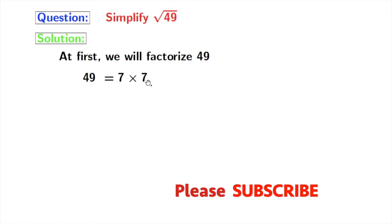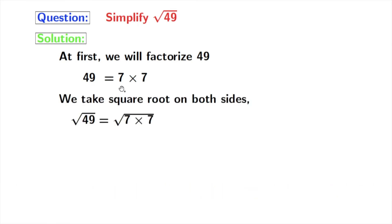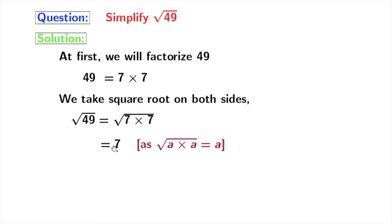Now, we will take square root on both sides. Doing that, we get square root of 49 is equal to square root of 7 times 7. That is equal to 7. Here, we have used the rule: square root of A times A is equal to A.